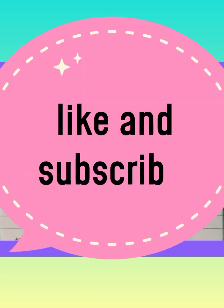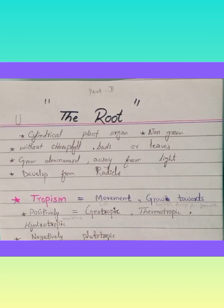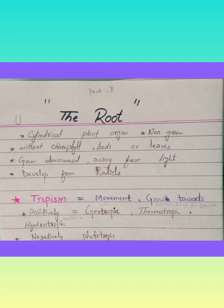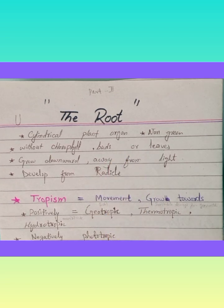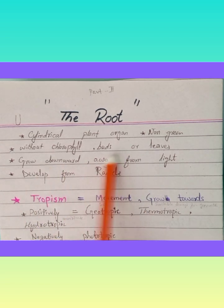A root is a cylindrical organ — non-green and without chlorophyll. Chlorophyll is absent in the root. Buds are not present in roots, and leaves are also absent. After this chapter, we will study the stem in detail, and we will study the underground stem. The main difference between a stem and a root is that in a stem there will be buds and leaves, while in a root both things are absent, so you will be able to distinguish between the root and underground stem.